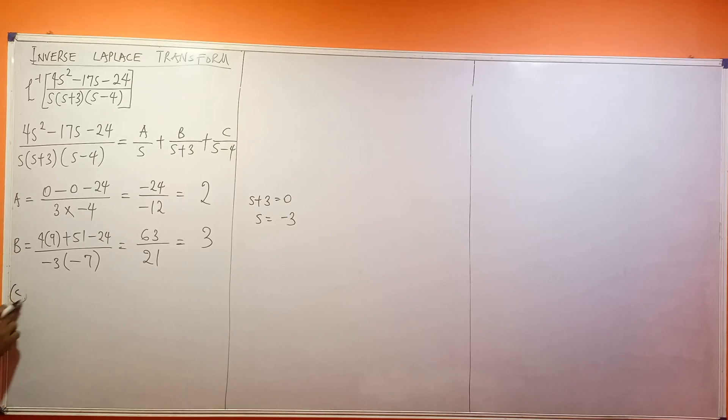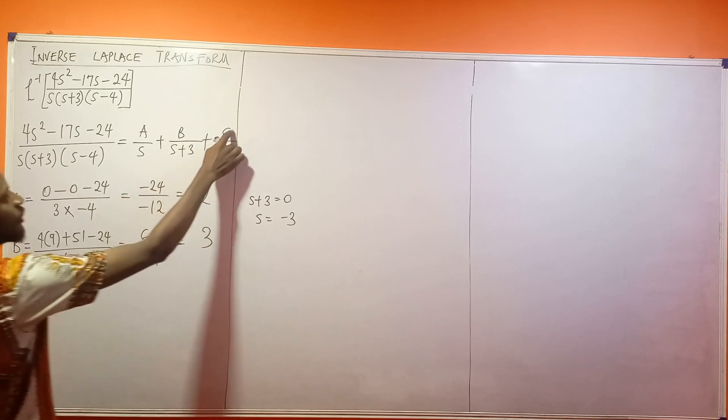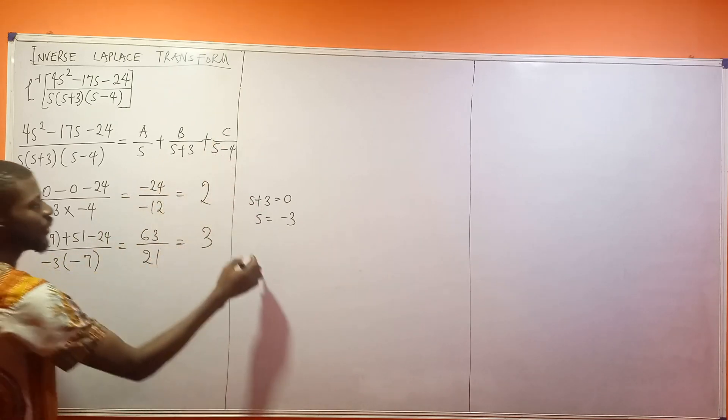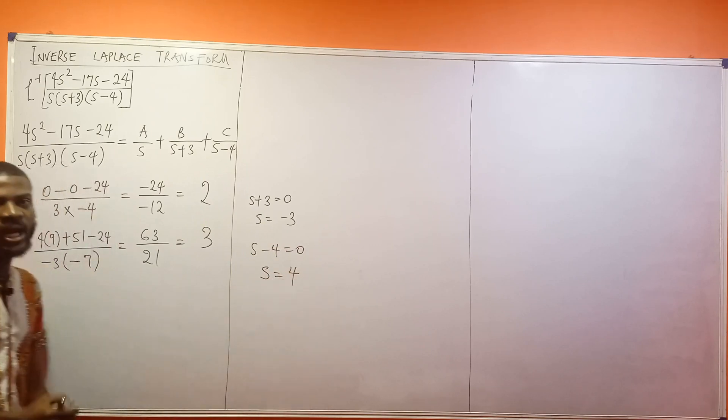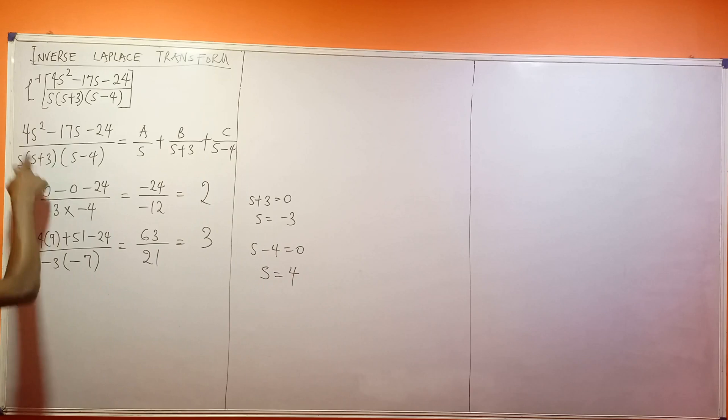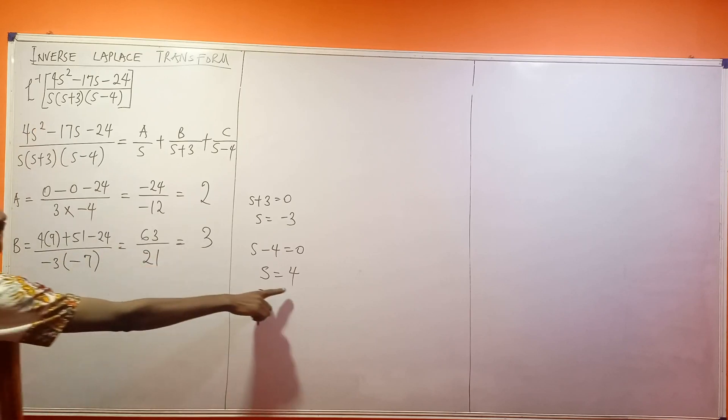To get our C, what's at the bottom of C? S minus 4. If you say s minus 4 should be equal to 0, s will be equal to 4 at the end of the day. So anywhere you see s, you're going to be putting 4. So let us put 4, s squared, 4 squared is 16, 16 times 4 will give us 64.